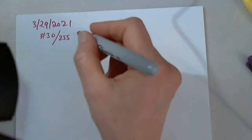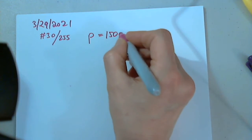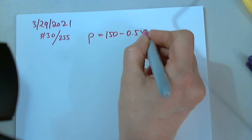So, Regs Limited, a clothing firm, determines that in order to sell X units, X suits, the price per suit must be, so this is the price per suit, 150 minus 0.5X.